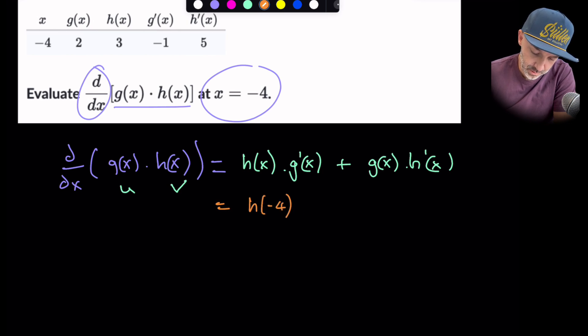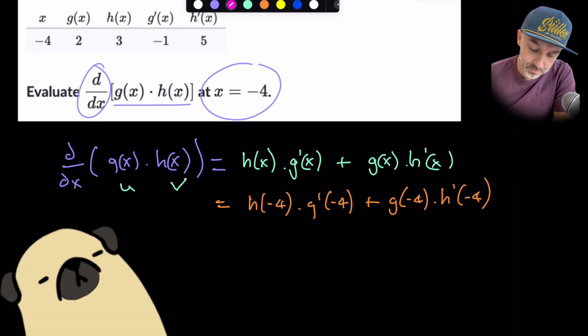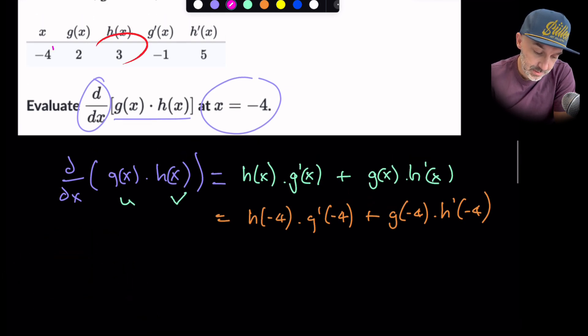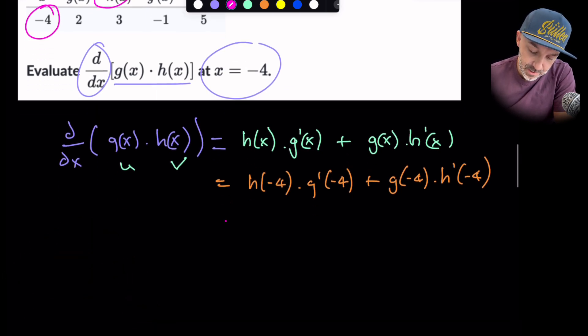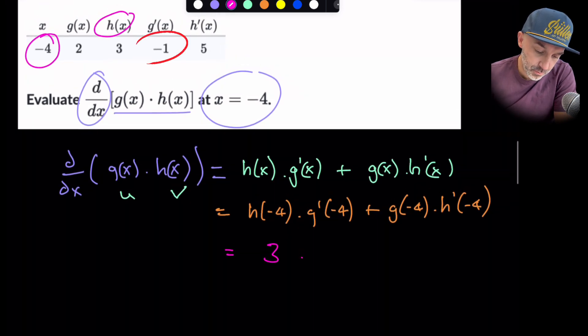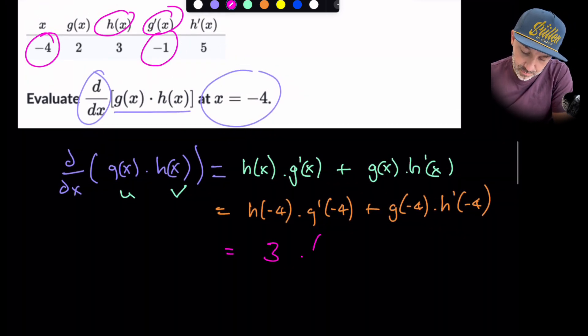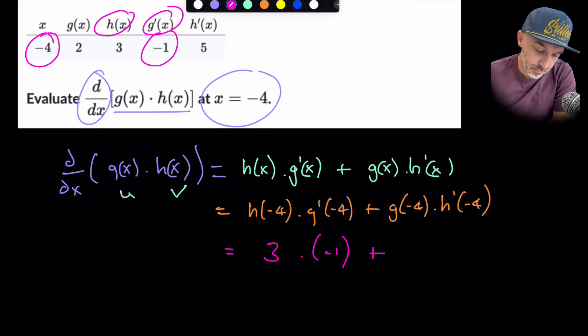So we're going to say h of minus 4, g prime of minus 4, g of minus 4, h prime of minus 4. And this is the, we've got past the hardest part now, because we need to now just go up to the table and read off the values. So h of minus 4, let's go and do this. Here's minus 4. So h of minus 4 is 3. g prime of minus 4, g prime of minus 4 is minus 1. g of minus 4 is 2. And h prime is 5. I'm going to put brackets around those. Okay, so we're getting a grand total of negative 3 plus 10. So the answer is 7.